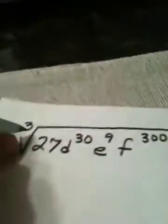Well, when I look up here, 27 is obviously a perfect cube. So that's easy. And each one of these exponents is divisible by 3. So without any work...